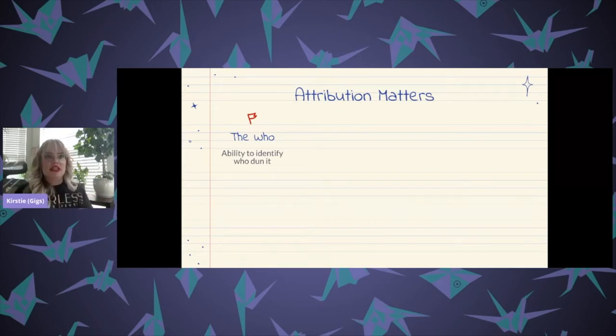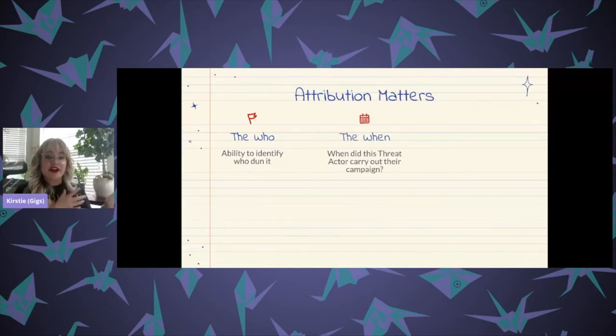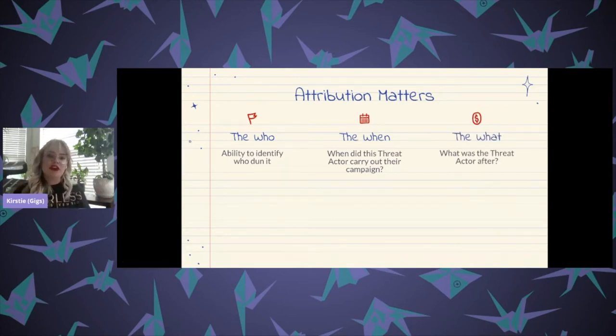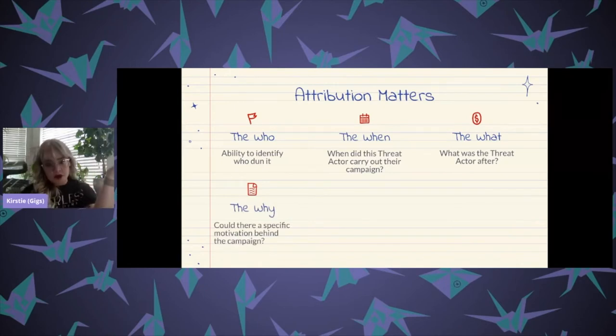Next, we see when did this threat actor start or end this campaign that they're reporting on, or is it still an ongoing incident, right? Then we have, what was the intended outcome? This goes along with the who. Was it data theft, was it disruption, was it just monetary based, right? And then that follows on with, could there be any other motivations behind the campaign? Something like espionage or political interference or advantage, or was it just purely a nuisance type attack?